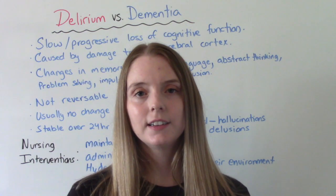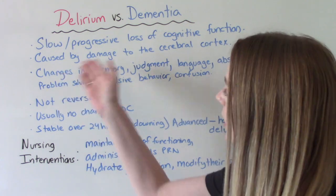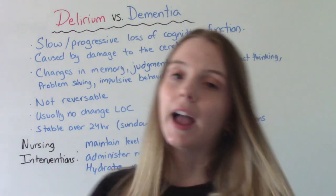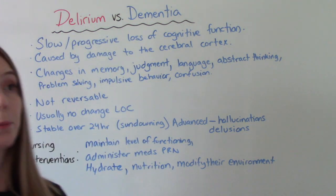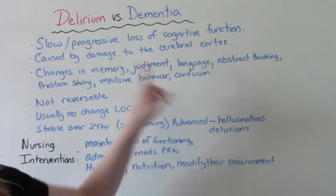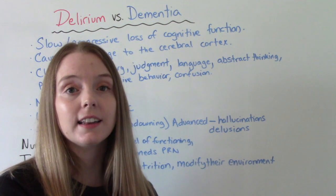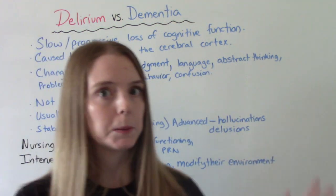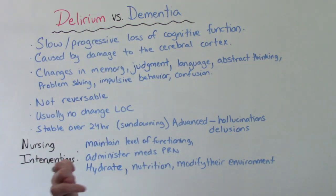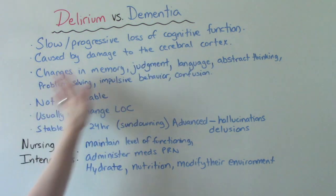Now let's talk about dementia. Dementia is a slow process that causes the progressive loss of cognitive function. It's caused by damage to the cerebral cortex, and the patient with dementia can experience changes in their memory, judgment — meaning they make impulsive decisions that might be dangerous — language, abstract thinking where everything becomes very black and white, problem solving, and confusion.